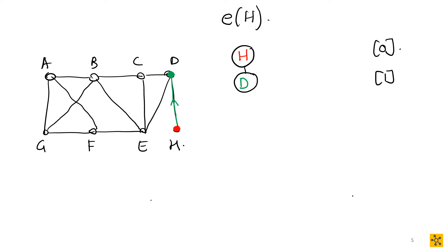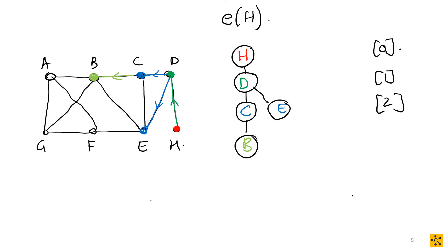Now we look at D and activate all its adjacent vertices — this is the breadth-first search. That gives us C and E, which get a length of two. You can see you've traveled two edges from H to C, and two edges from H to E. Continuing in alphabetical order, we start at C — its adjacent vertex is B. Then we look at E — its adjacent vertex is F. Both B and F get a length of three: H to B is three edges, H to F is three edges.